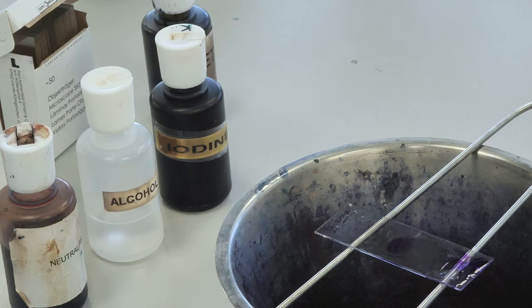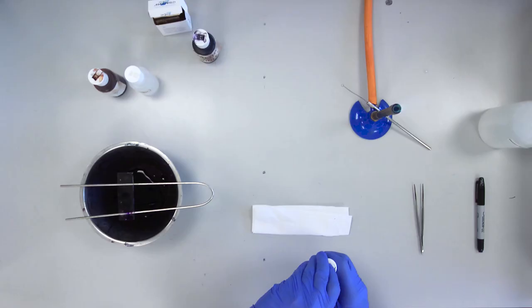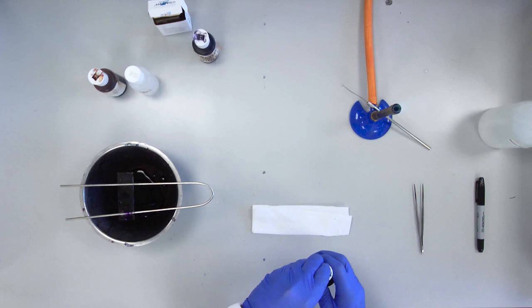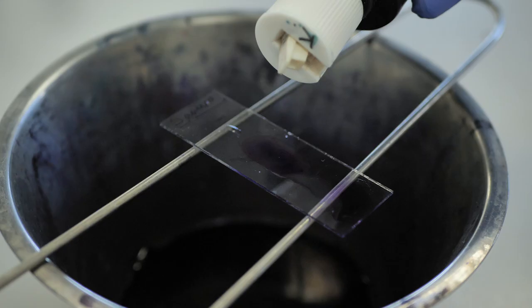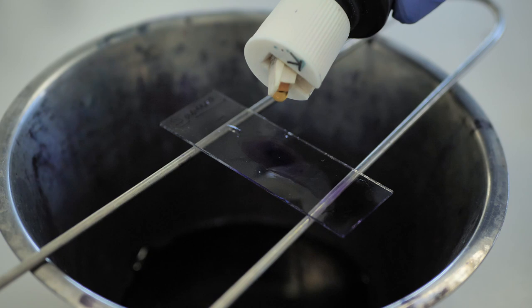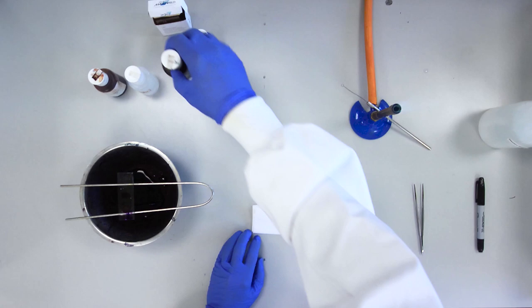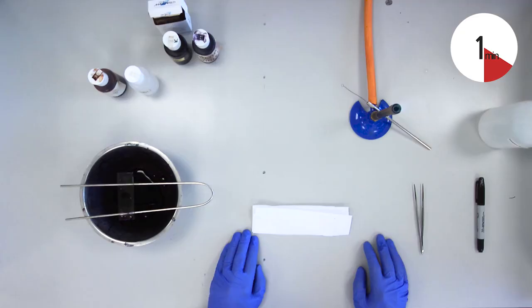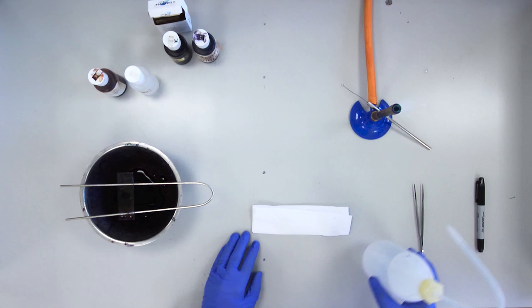Next, add Gram's Iodine to the slide and leave for one minute. Wash the slide gently with distilled water from your water bottle into the metal dish.